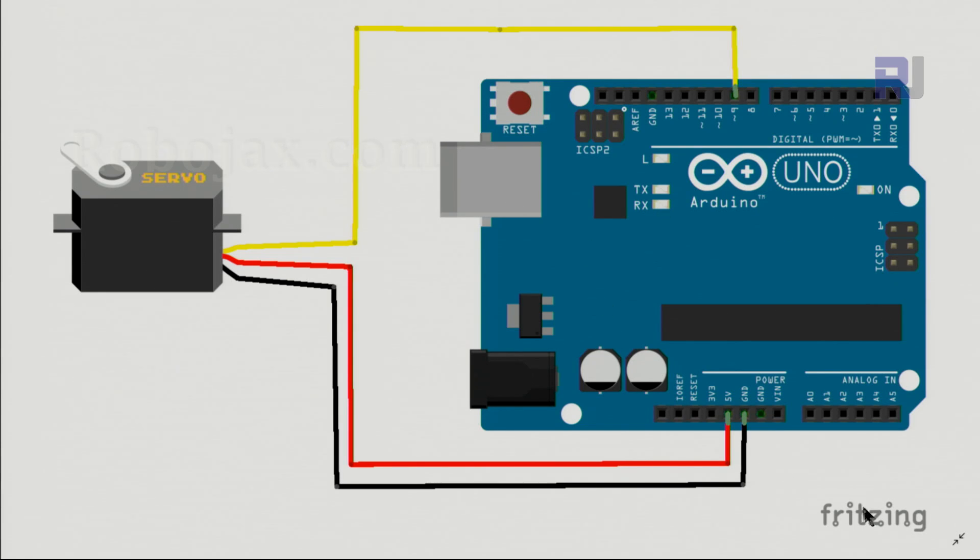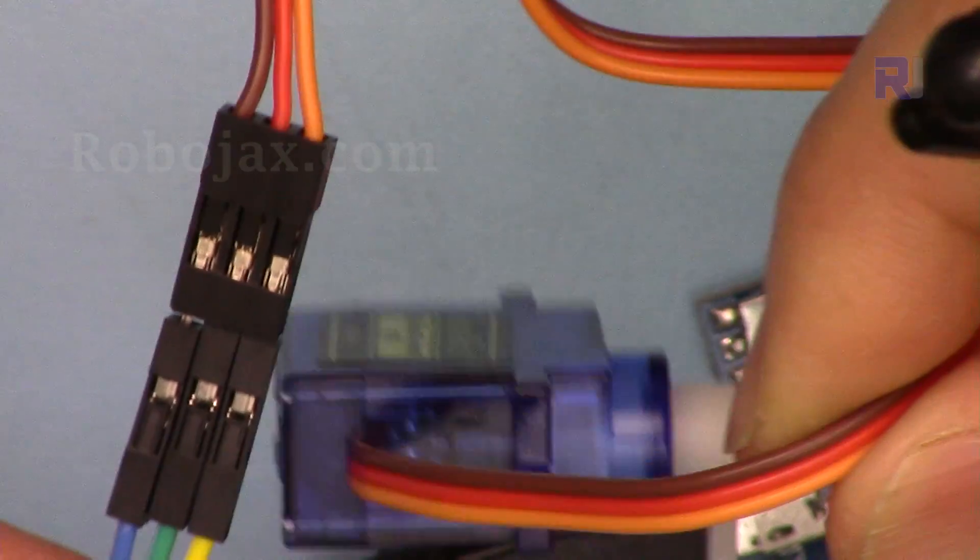Here is the wiring using Arduino. This is a servo motor connected to Arduino. The signal wire has been connected to pin 9, the middle wire which is VCC or power has been connected to 5 volts, and the ground has been connected to the ground. Now let me explain the wiring.